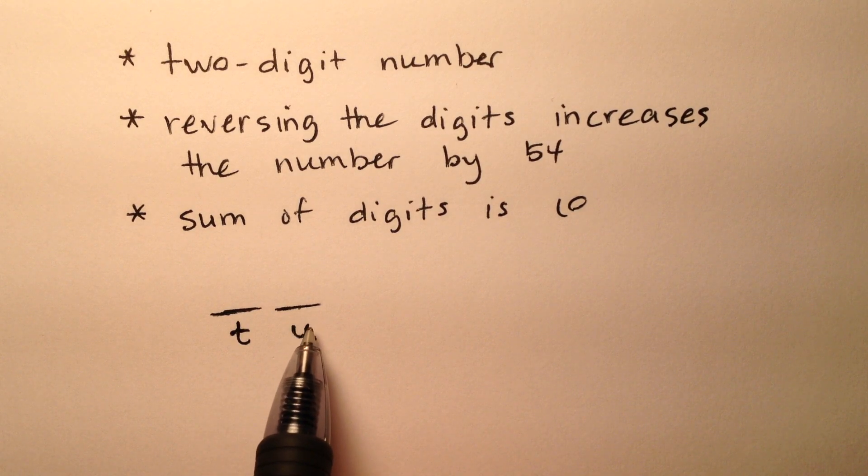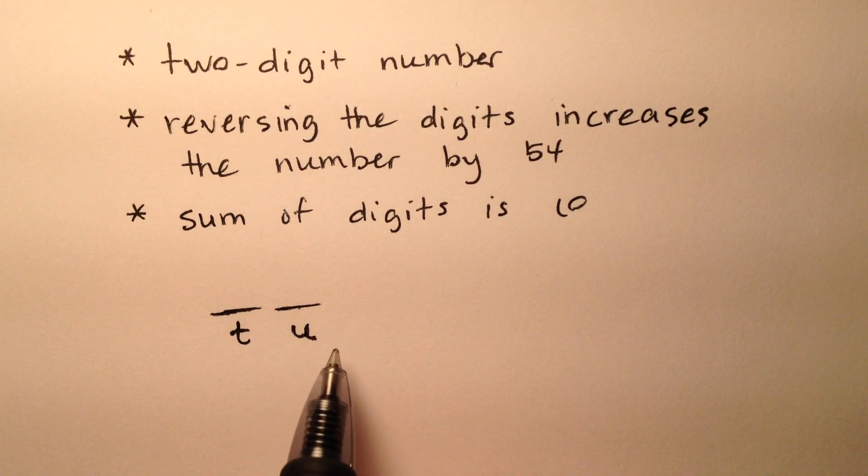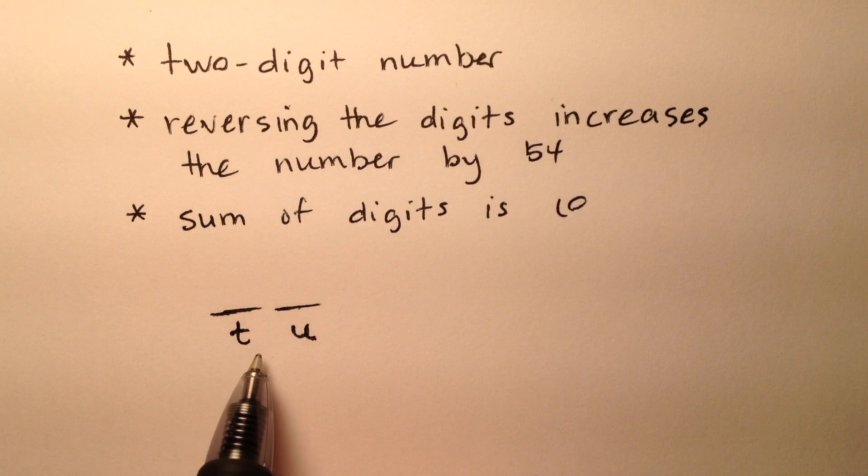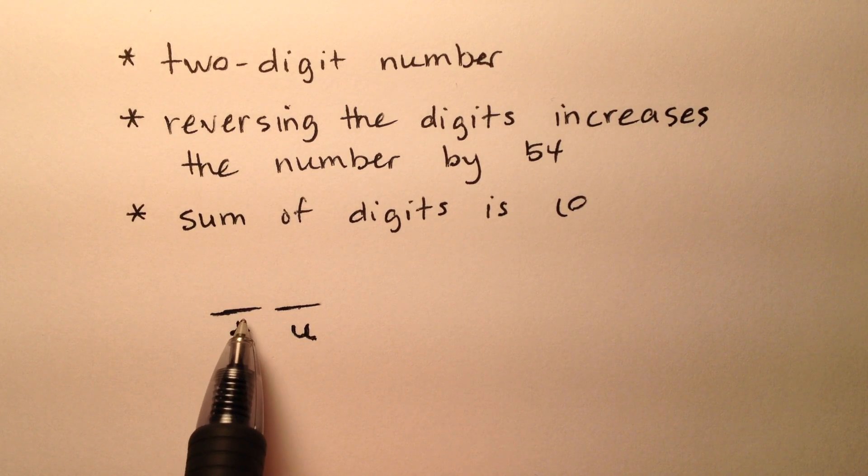What's the value of any number in the units place? It's just U. And what's the value of any digit in the tens place? It's actually 10T, because it's in the tens place.